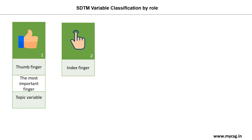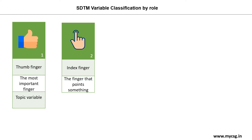And then comes the index finger. Let us associate the tag 'the finger that points or identifies something' to the index finger. This way we can relate identifier variables to the index finger.